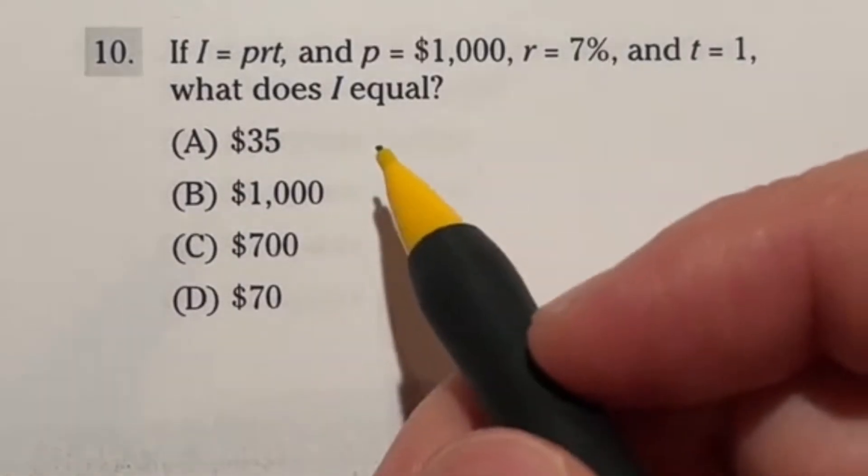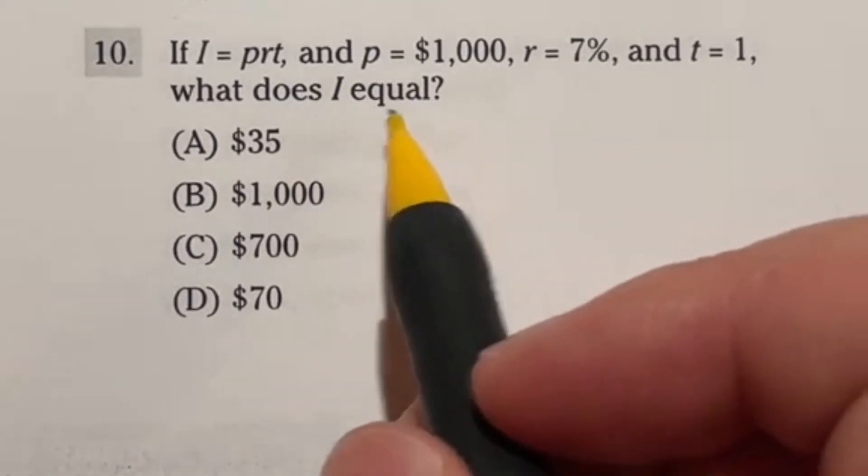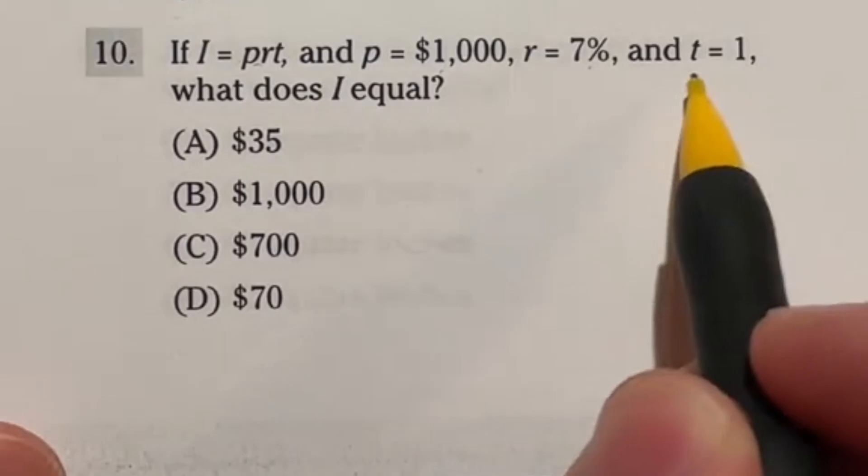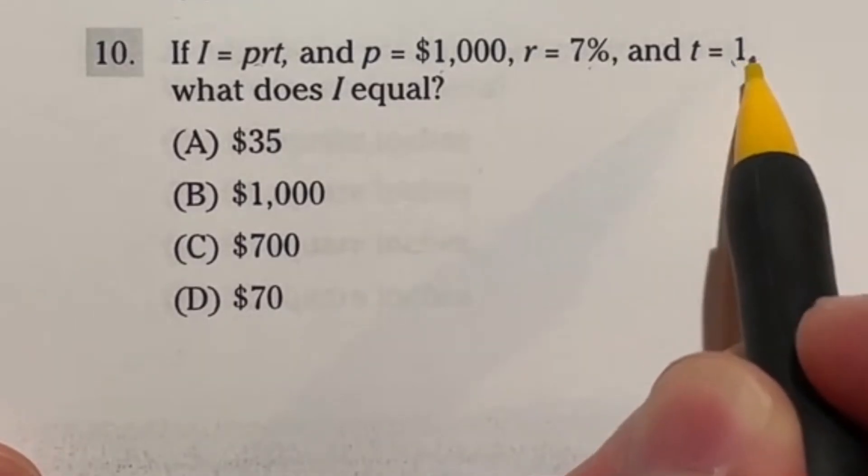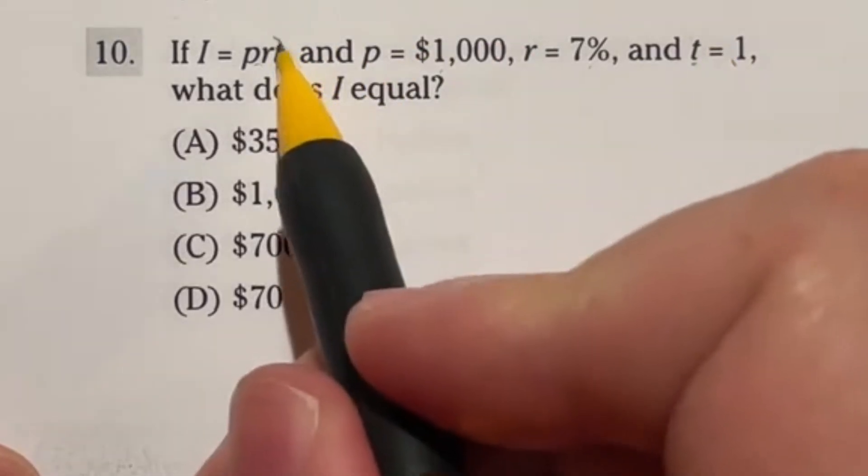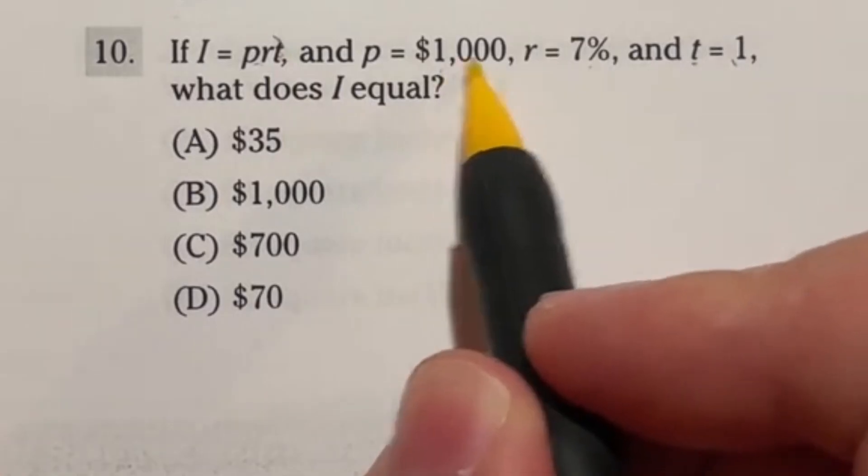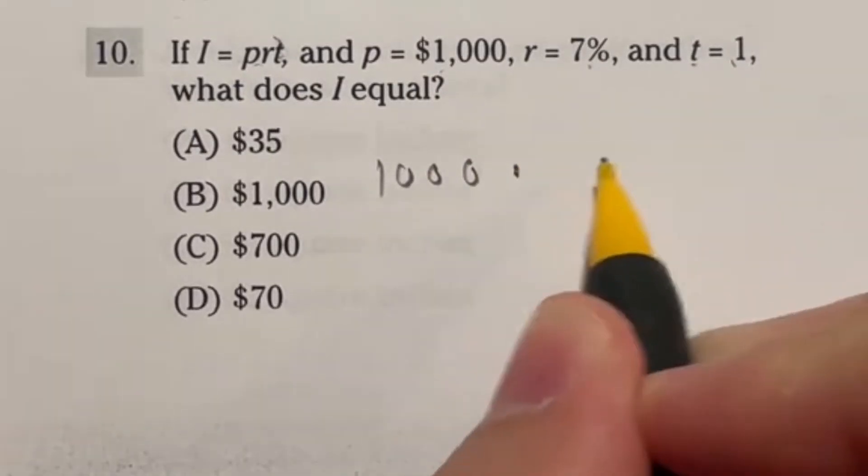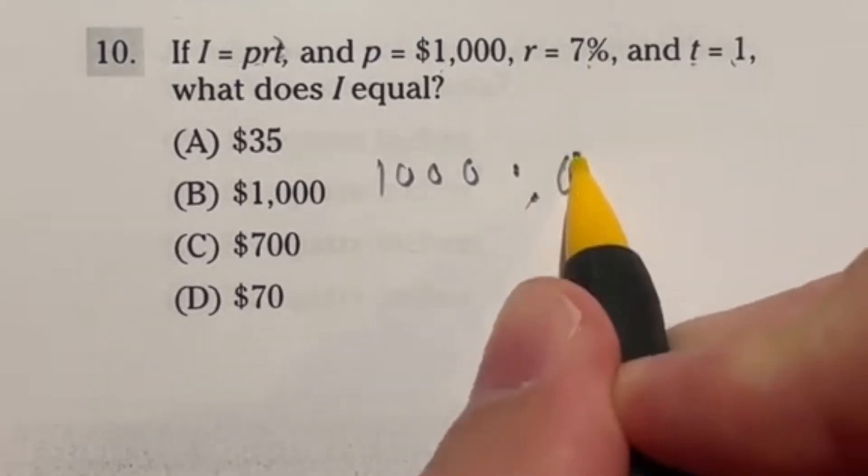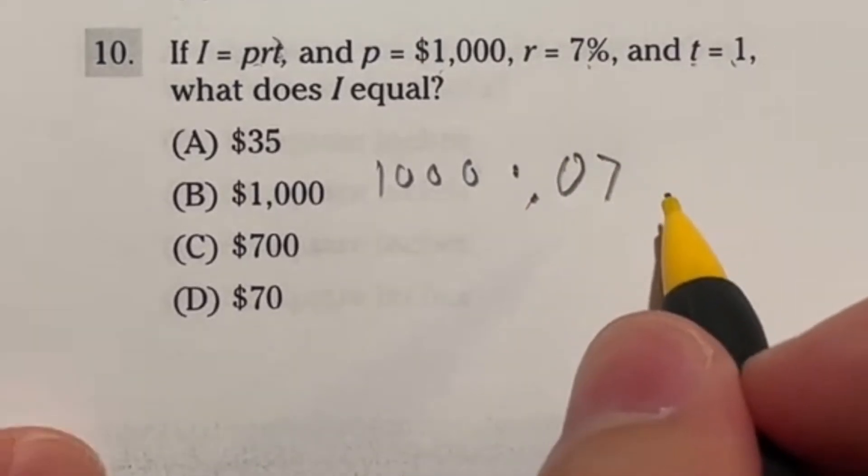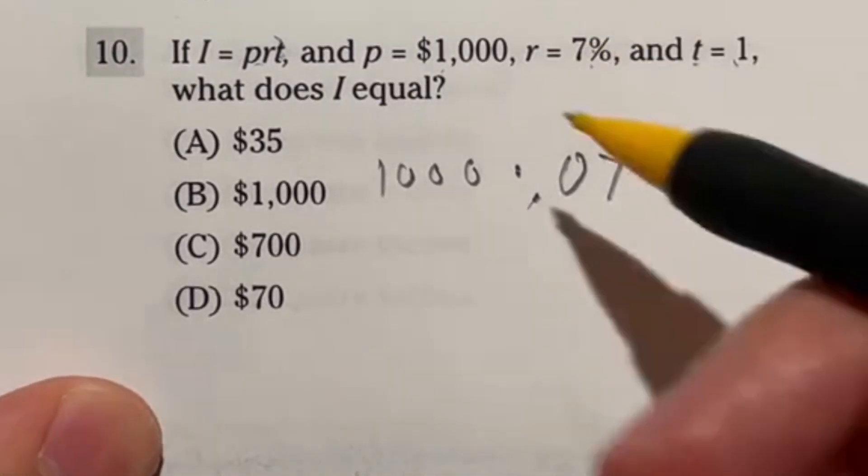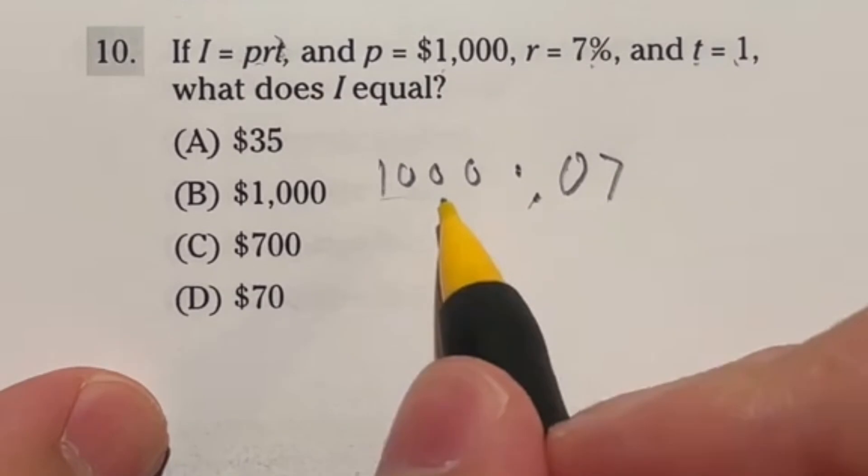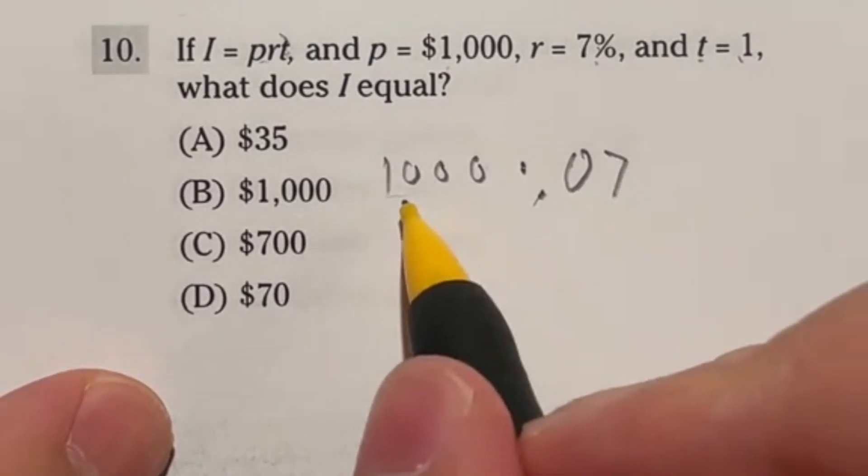Number 10, I feel like looks a lot worse than it is. It says, what does I equal if I is p times r times t? And it gives us p, r, and t. Now multiplying anything by 1 just leaves it with itself. So in this case with t being equal to 1, we actually don't have to worry about the t at all. Really, we're just going to be doing 1,000 times this 7%. So I got 1,000 times 7%. Now remember, 7% is 0.07 if we're looking at a number. Now right off the bat, I can already see what this answer is going to be because whenever you're multiplying by zeros like this, you're essentially just moving the decimal place that many times to the right. So in this case, I would be moving it three times to the right, putting it right here and bringing another zero.